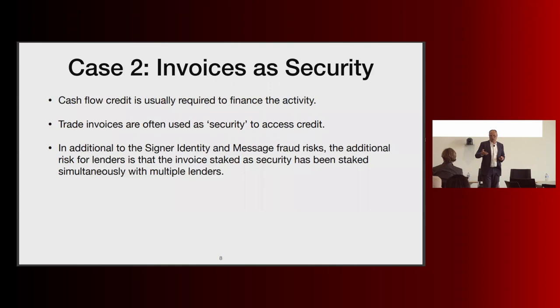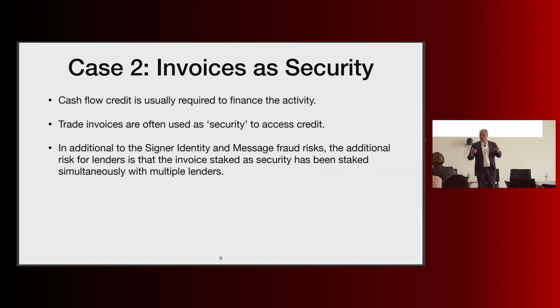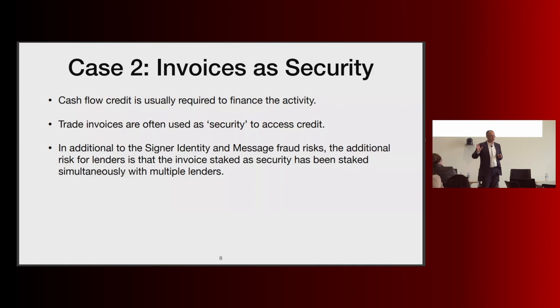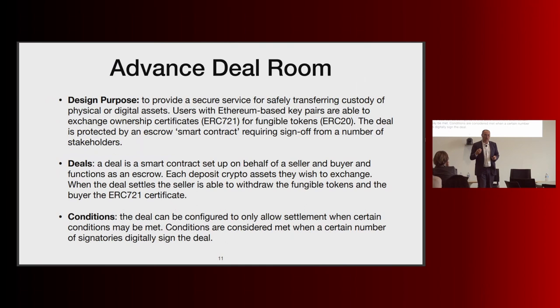Another area of risk is invoicing used as security for finance. A person with an invoice could take the same invoice to five or six different lenders and raise debt against it. You may recall that early last year a very large global supply chain finance company went broke — headed by an Australian and having grown enormously delivering factoring finance. It collapsed precisely because most of its invoices were fake: capital was being raised from investors against fake, multiply-used, or anticipated future invoices.